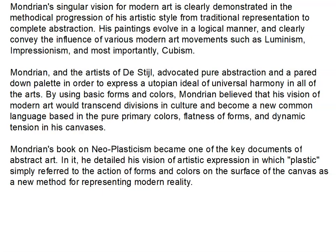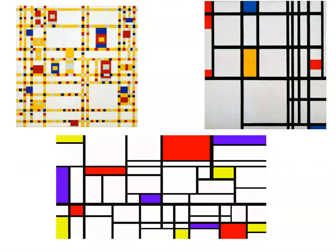Mondrian's book on neo-plasticism became one of the key documents of abstract art. In it, he detailed his vision of artistic expression in which 'plastic' referred to the action of forms and colors on the surface of the canvas as a new method for representing modern reality. His other works are a little more dynamic and busy than the piece in this set, but there is still that simplified tension within them.